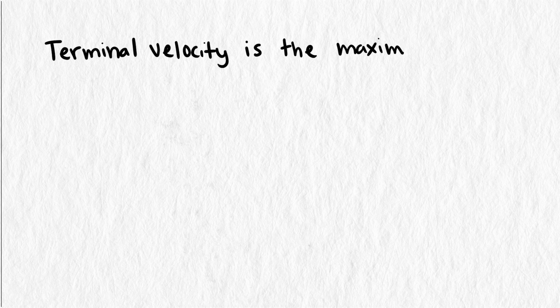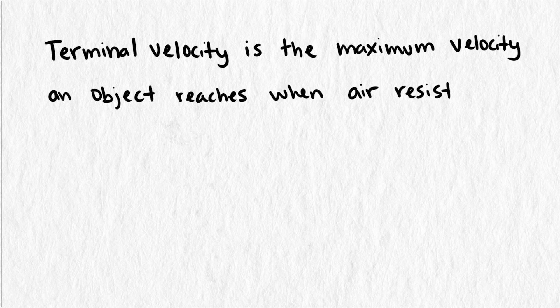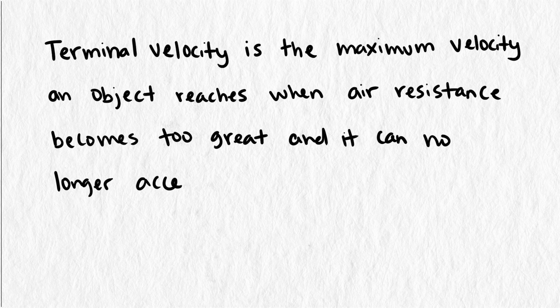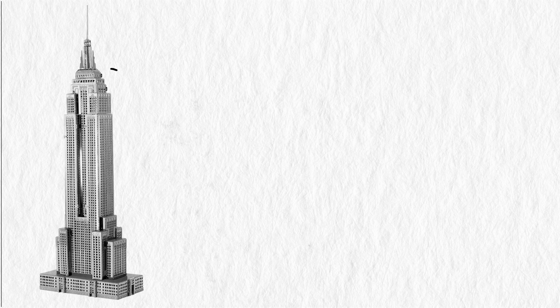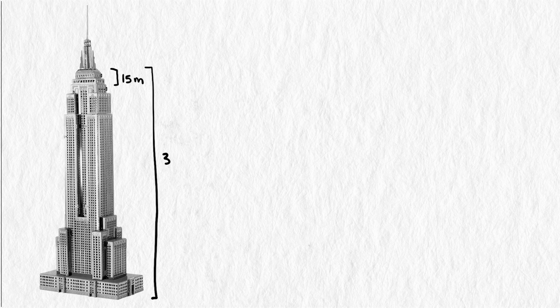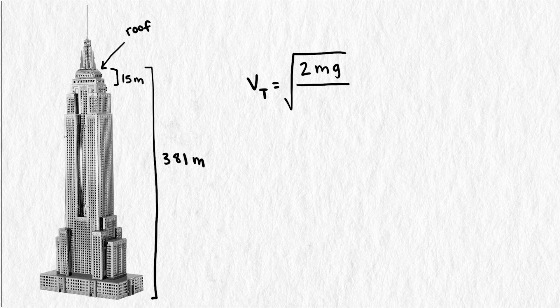Terminal velocity is the maximum velocity an object reaches when air resistance becomes too great, and it can no longer accelerate. Something as light as a penny reaches terminal velocity in as little as 15 meters. That's much shorter than the height of the Empire State Building, which is 381 meters. Since our penny will for sure reach terminal velocity before hitting the ground, we'll use this formula to calculate that velocity.